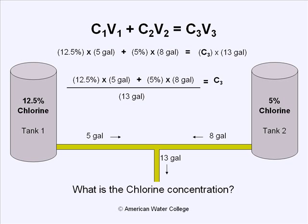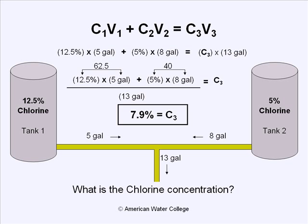One thing to point out is to remember order of operations. You need to solve the two multiplication problems before combining them. When we multiply 12.5 times five, we get 62.5. We add that to eight times five, which is 40. When we combine those and divide by 13 gallons, we find that the final concentration is 7.9%.